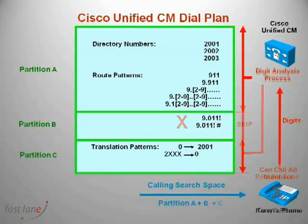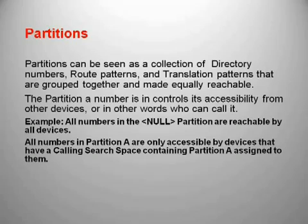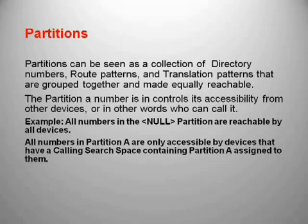If we look at another example, in the case of Karen's phone, Karen's calling search space contains partition A plus B plus C. This will mean Karen can call all numbers in the dial plan, including the international numbers. Partitions can be seen as a collection of directory numbers, route patterns and translation patterns that are grouped together and made equally reachable. The partition a number is in controls its accessibility from other devices — or in other words, who can call it. All numbers in the null partition are reachable by all devices. All numbers in partition A are only accessible by devices that have a calling search space containing partition A assigned to them. In other words, the partition that your telephone number is in controls who can call you.